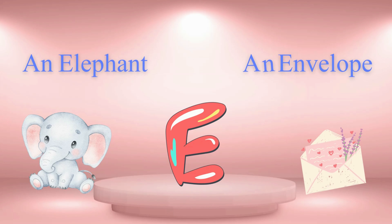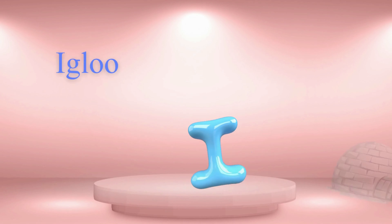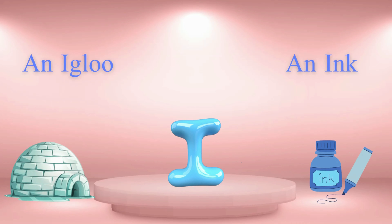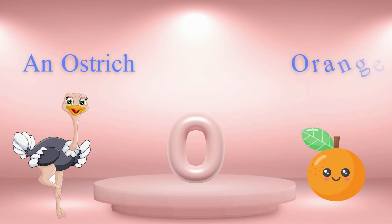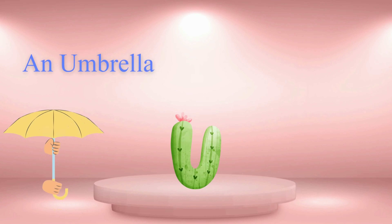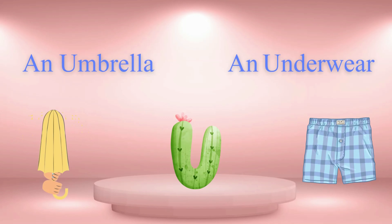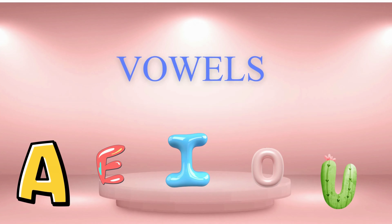An envelope. An igloo. An ink. An ostrich. An orange. An umbrella. An underwear. The vowel words are a team. They are fun to learn.